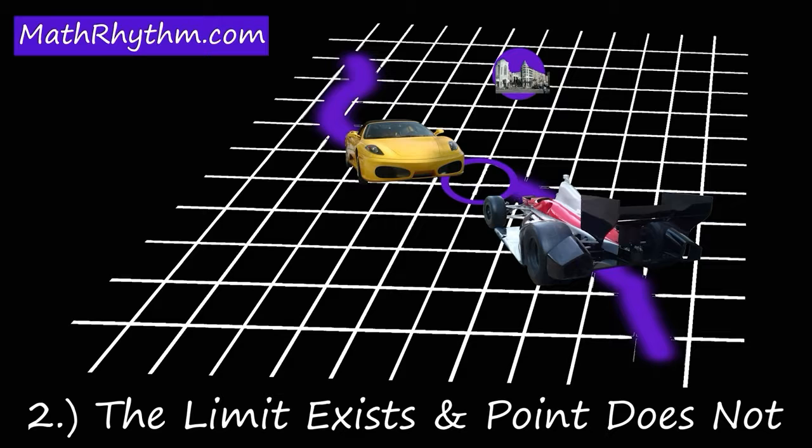And if the function exists, it simply doesn't exist in the same place that the limit does. So we'll get two different values, one value for the limit, one value for the function.